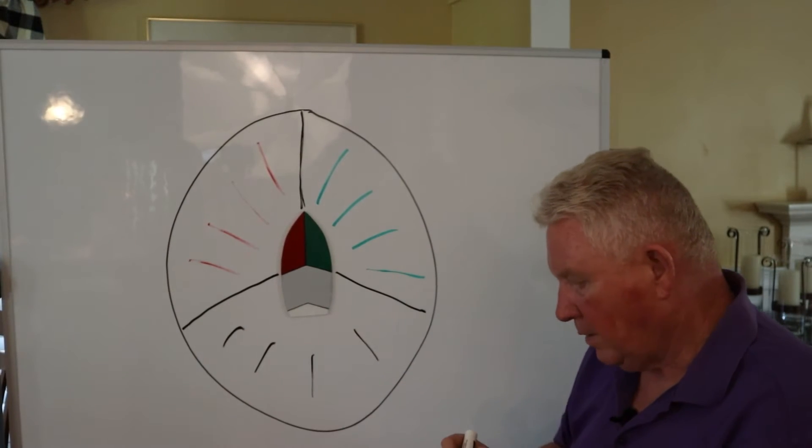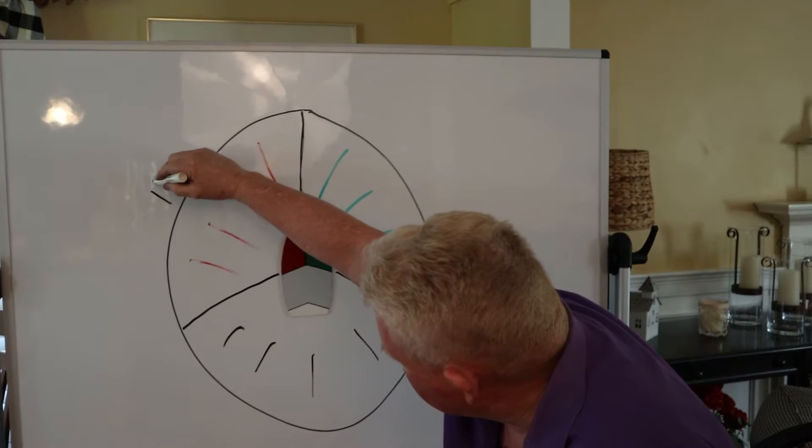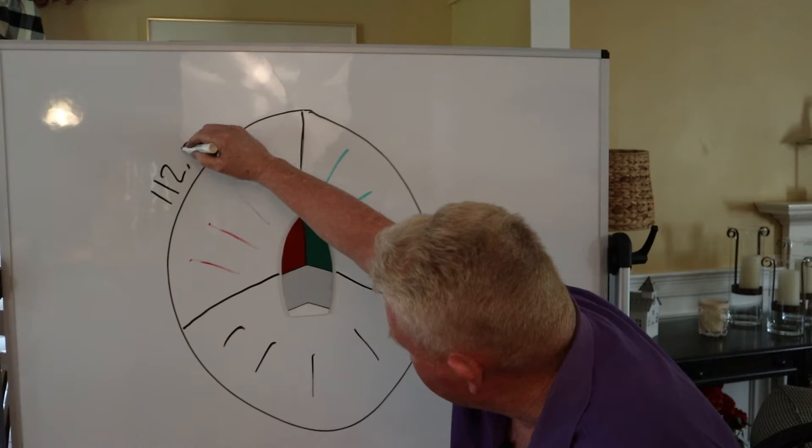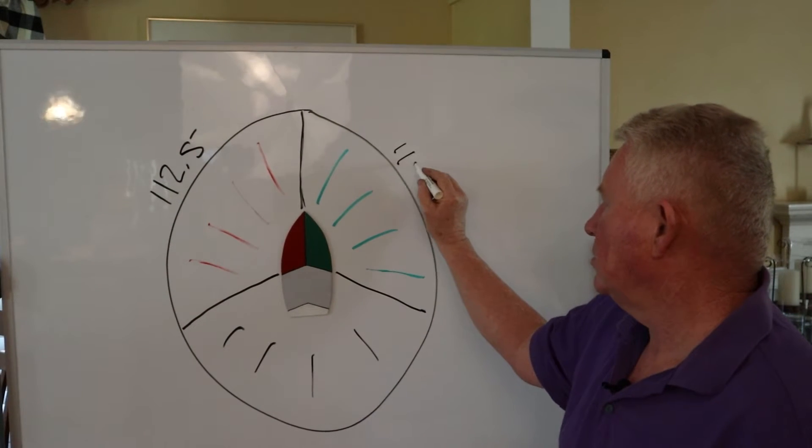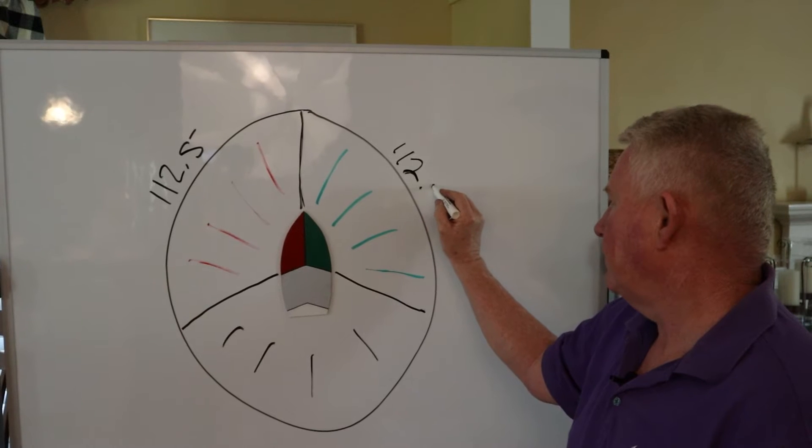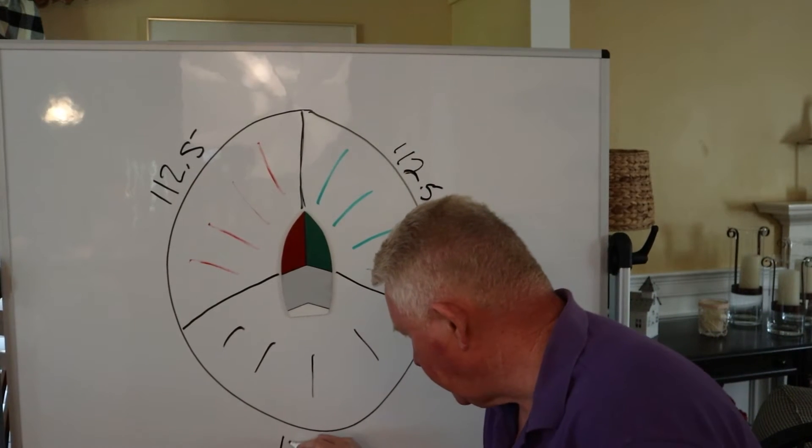Okay, now these side lights are 112.5, this side light 112.5, and a stern light is 135 degrees.